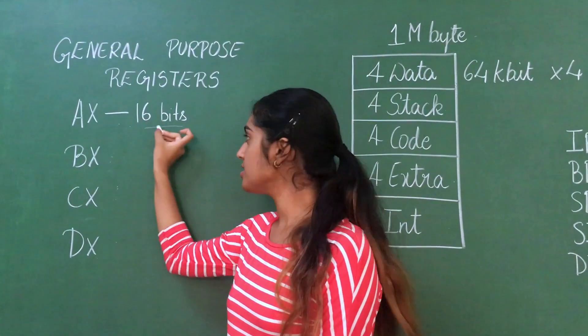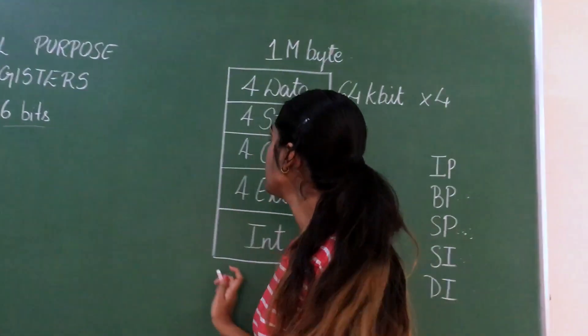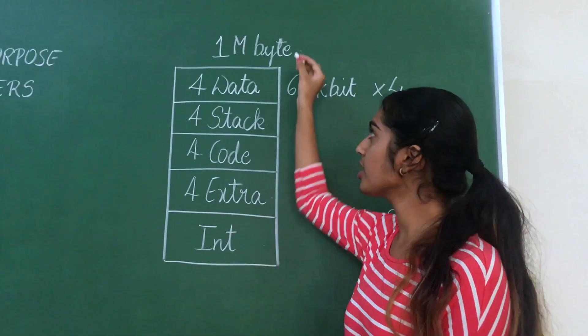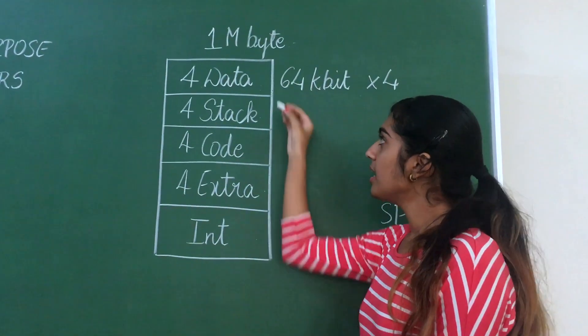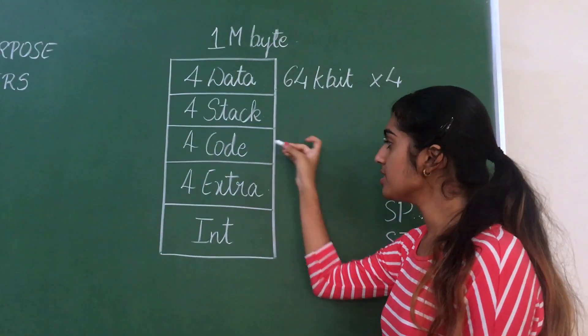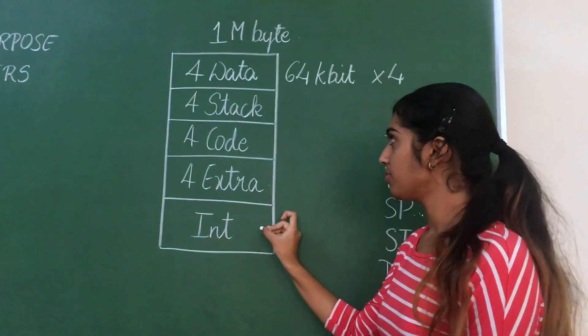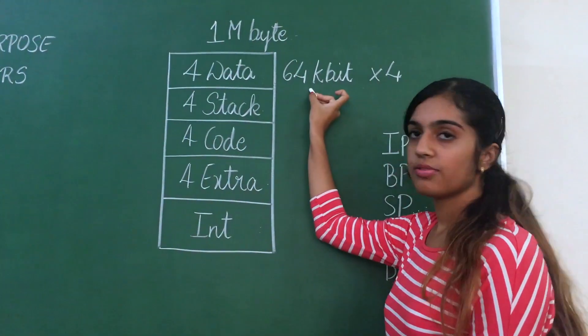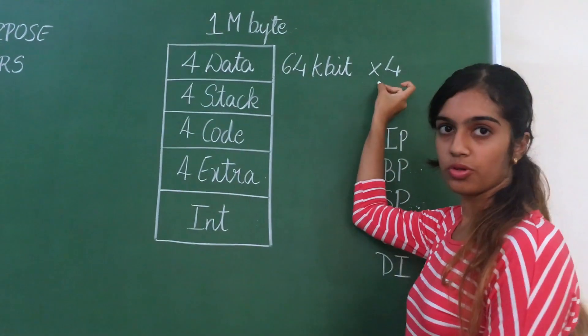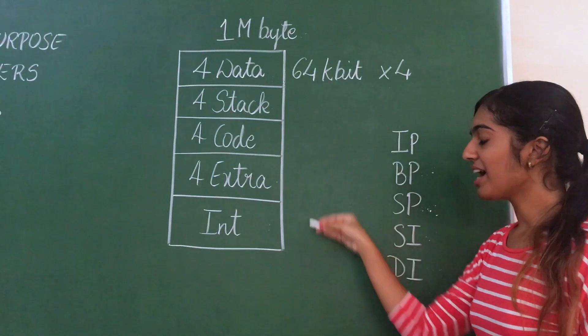If we consider 8086 microprocessor with memory location 1 megabyte, it is divided as follows: 4 data segments, 4 stack segments, 4 code segments, 4 extra segments, and 1 interrupt. Each segment is 64 kilobits, so there are 4 data segments of 64 kilobits times 4.